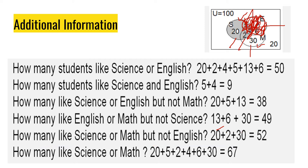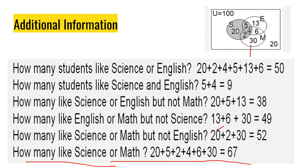For the last question: how many like Science or Math? We consider everything in both the Science and Math circles — the values 20, 5, 2, 4, 6, and 30. When you add them all, it gives you a sum of 67 who like Math or Science.